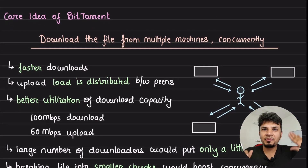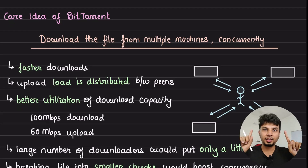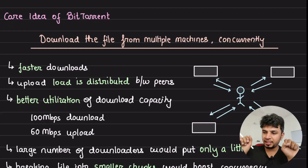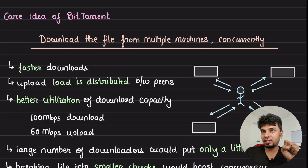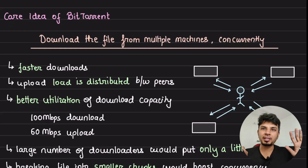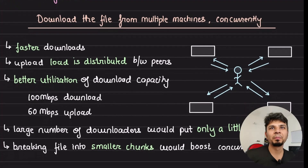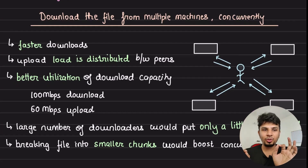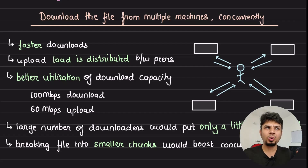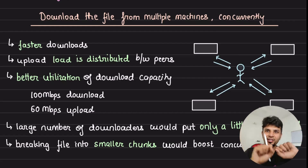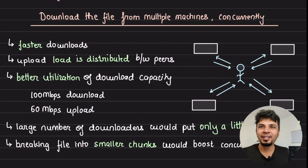Now comes the core idea of BitTorrent: downloading a file from multiple machines concurrently. The download speed of a particular file is limited by the upload capacity of the sender — be it a server, a user, or anything else. If you can download at 100 Mbps but the sender can only upload at 60 Mbps, the max speed you will get is 60 Mbps. So instead of downloading the file from one machine, what if you distribute this file across the network and connect to 50 different clients at the same time and download the same file together? This is the idea behind BitTorrent.